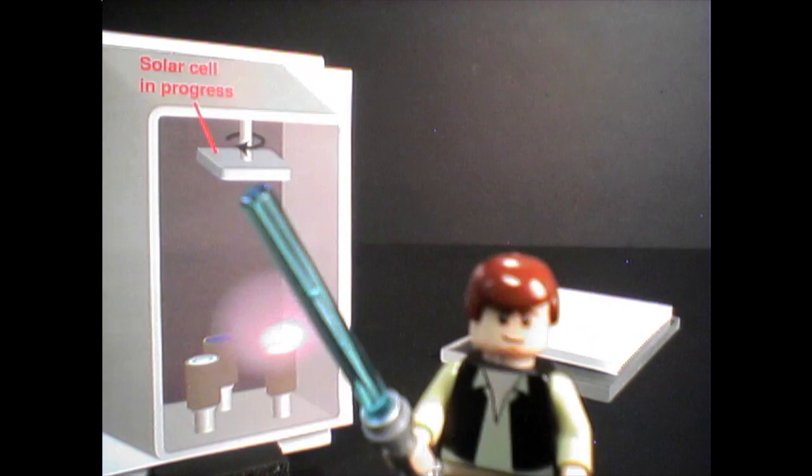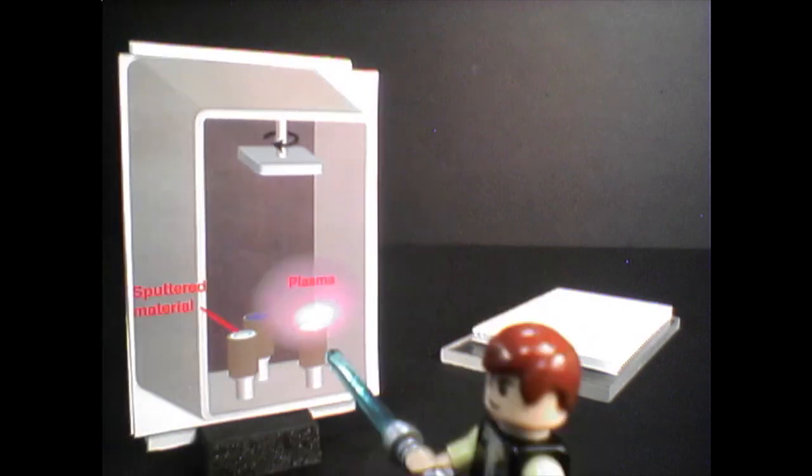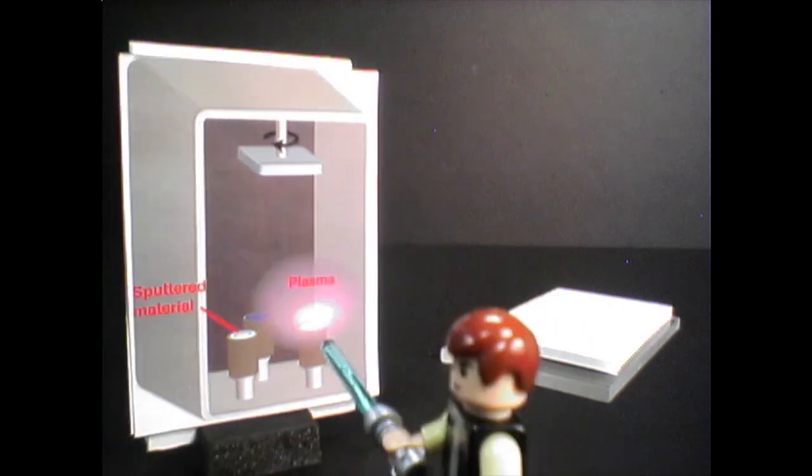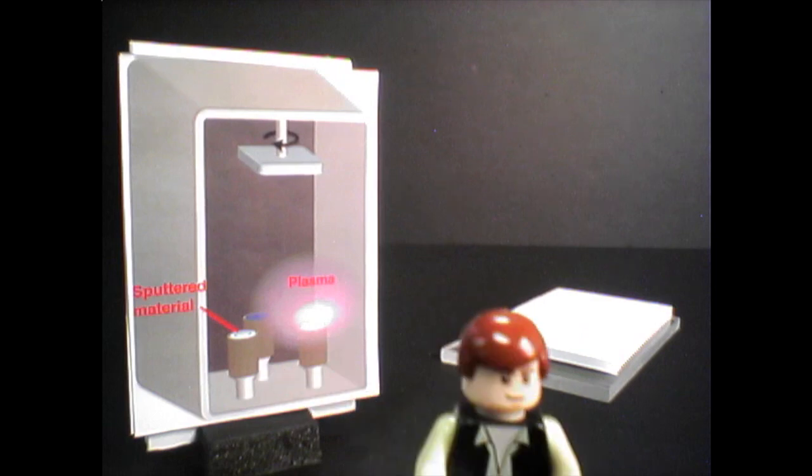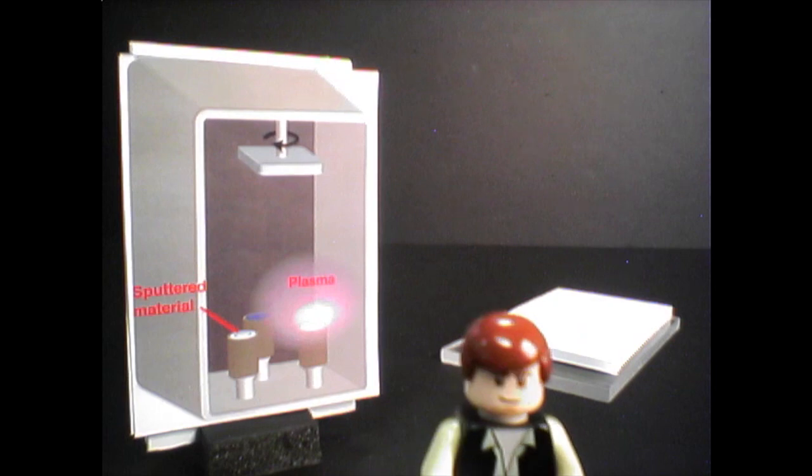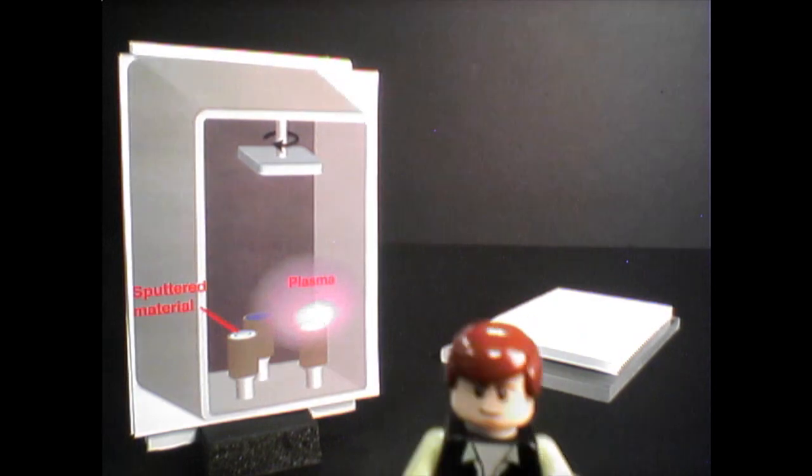Then we create a plasma using an oscillating electric field. The energetic plasma knocks off tiny particles from a chunk of the material we want to deposit. Those particles land on our glass tile and build up a smooth film. Let's see what that looks like.